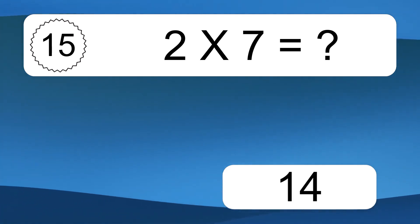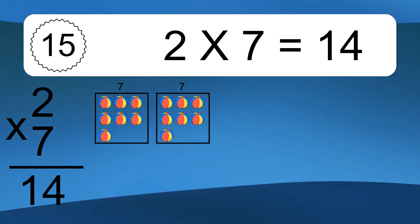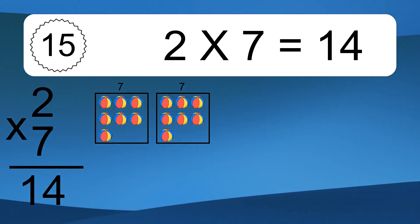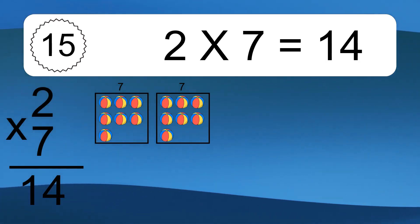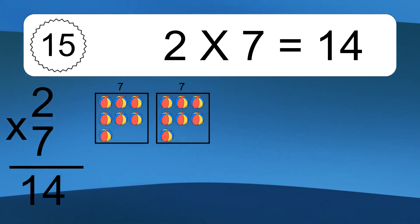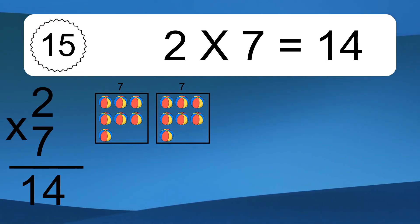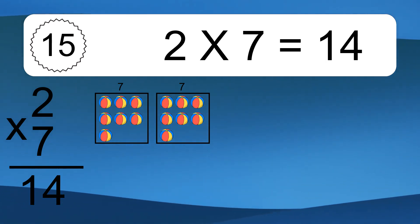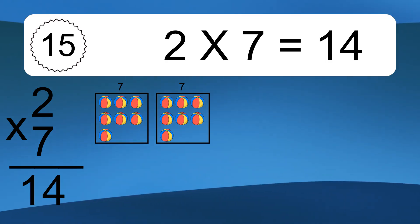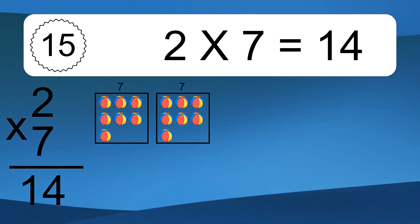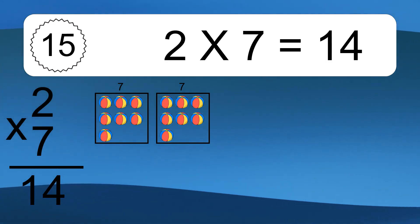2 times 7 equals what? 2 times 7 equals 14. We have 2 boxes and each box has 7 colorful balls inside. If you count all the balls in all the boxes together, you will have 2 times 7 balls. This equals 14 balls.